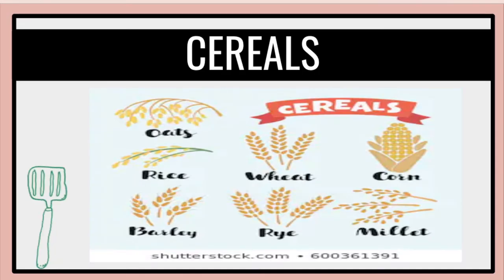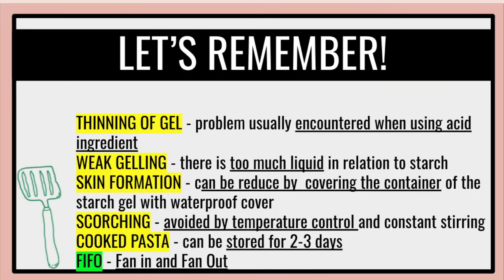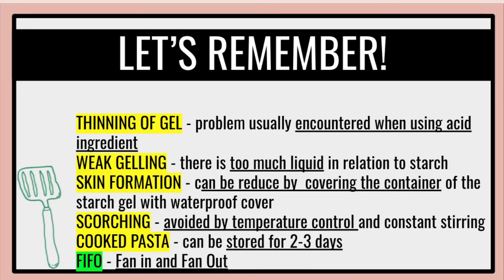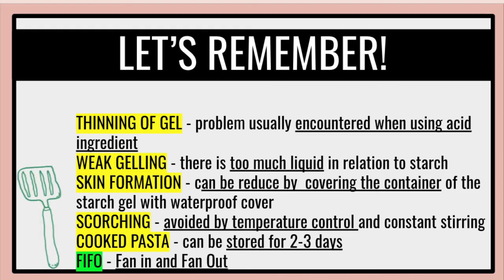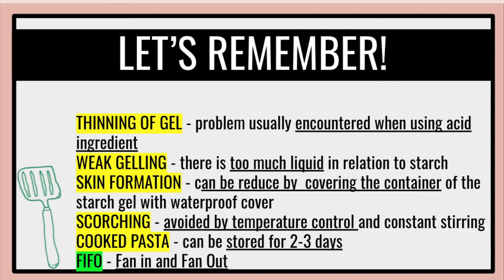Cereals include oats, rice, wheat, rye, corn millet, and barley. Remember that thinning of gel is the problem usually encountered when using acid ingredients. With weak gelling, there is too much liquid in relation to starch. Skin formation can be reduced by covering the container of the starch gel with a waterproof cover. Scorching can be avoided by temperature control and constant stirring.